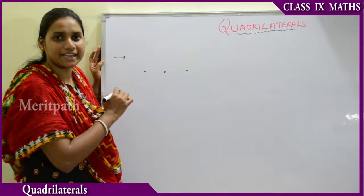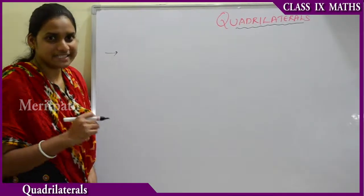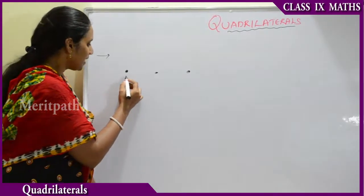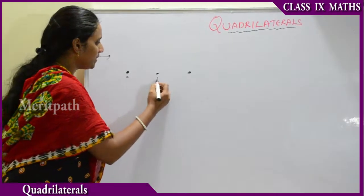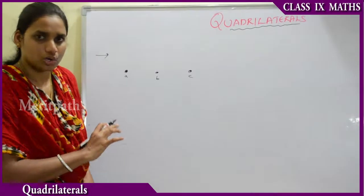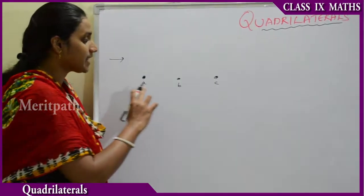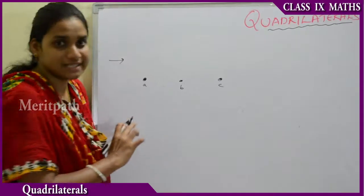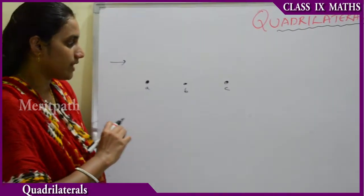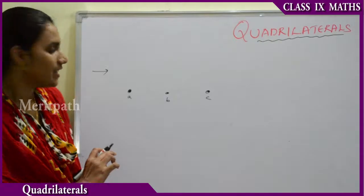Now let us discuss one more new topic: quadrilaterals. We have seen in the previous chapter the properties, definitions, and different types of triangles. Now let us see what a quadrilateral is and what are the types of quadrilaterals. Let us take three non-collinear points — that means if you take three points in a plane.